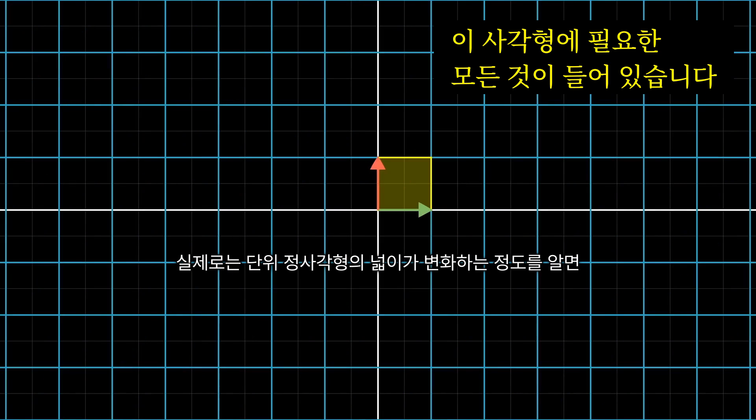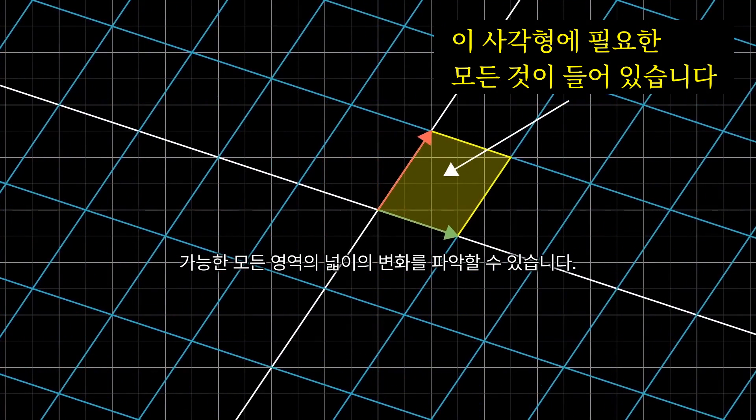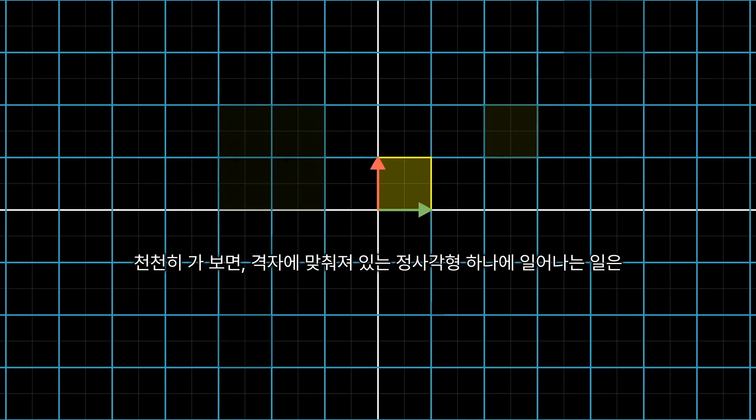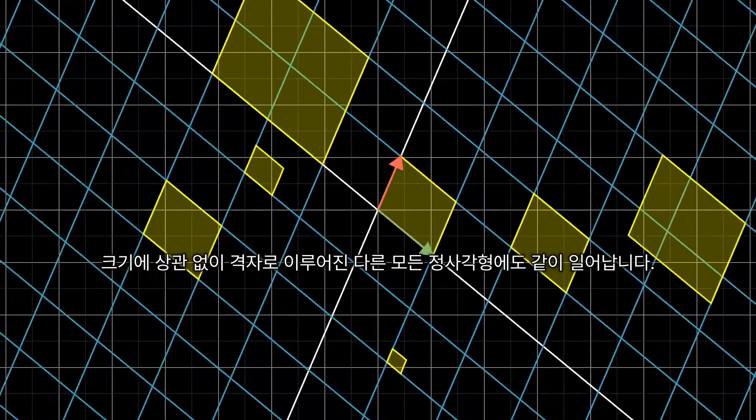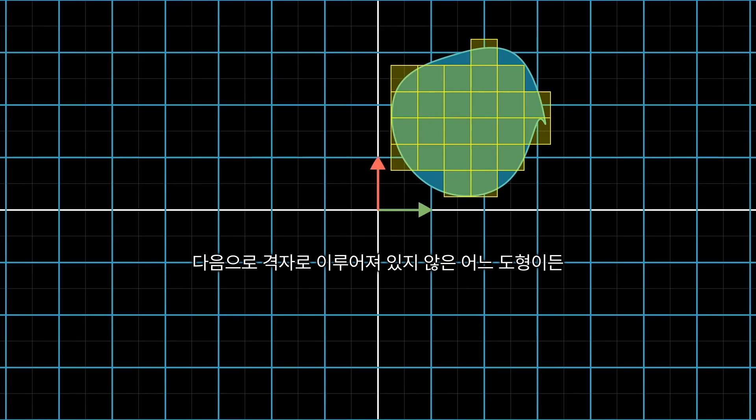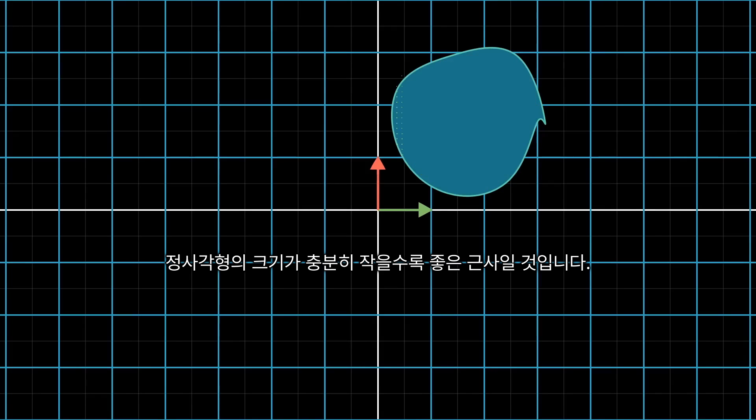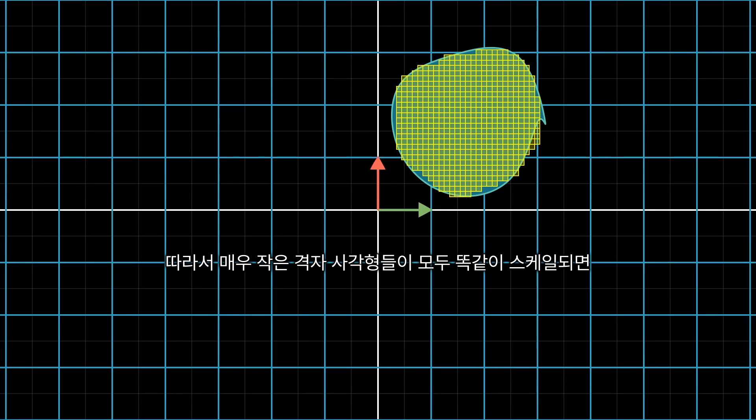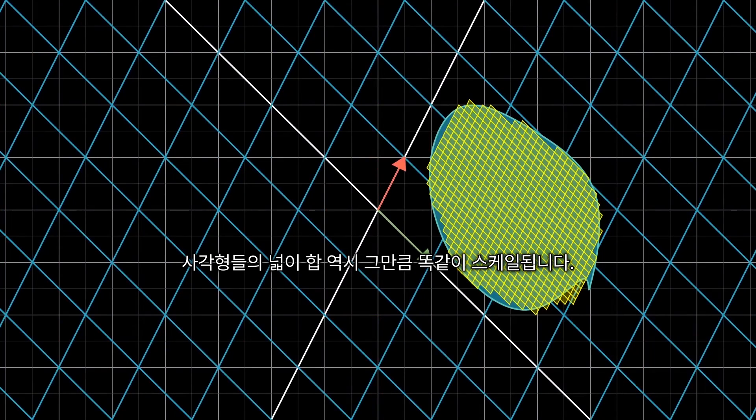Actually though, if you know how much the area of that 1-unit square changes, it can tell you how the area of any possible region in space changes. For starters, notice that whatever happens to 1 square in the grid has to happen to any other square in the grid, no matter the size. This follows from the fact that grid lines remain parallel and evenly spaced. Then, any shape that's not a grid square can be approximated by grid squares pretty well, with arbitrarily good approximations if you use small enough grid squares. So, since the areas of all those tiny grid squares are being scaled by some single amount, the area of the blob as a whole will also be scaled by that same single amount.